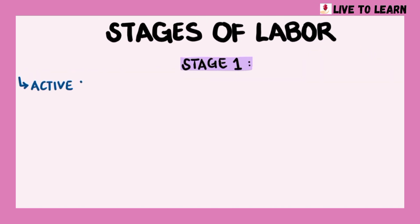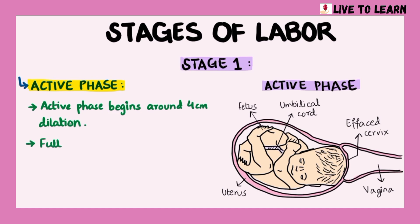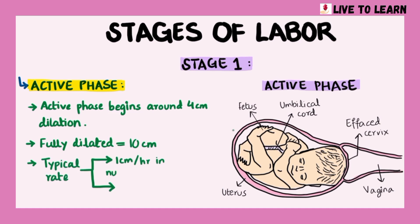Moving on to the active phase of the first stage of labor. The active phase begins around 4 cm cervical dilation and lasts until the cervix is fully dilated, that is 10 cm. The typical rate of cervical dilation is about 1 cm per hour in nulliparous women and about 2 cm per hour in multiparous women.